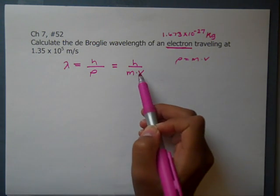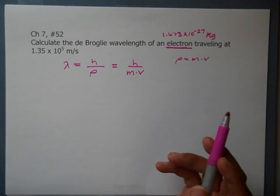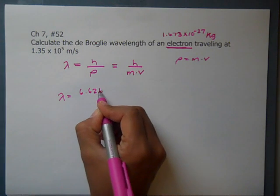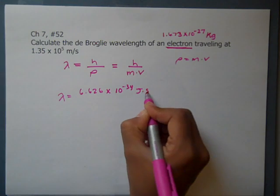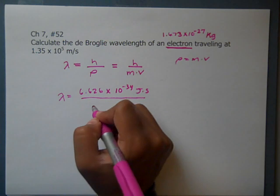We have the mass, we have the velocity, we also always have Planck's constant. So we can just plug and chug. Our wavelength is going to be Planck's constant, 6.626 times 10 to the negative 34 joule seconds, over mass times velocity.